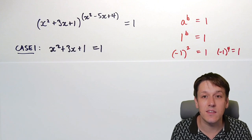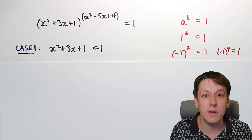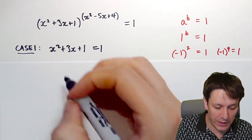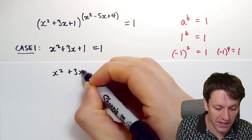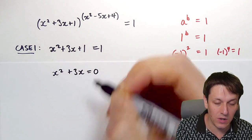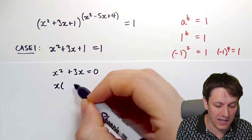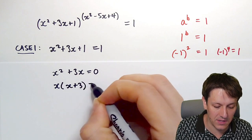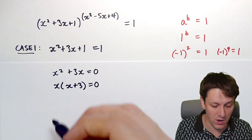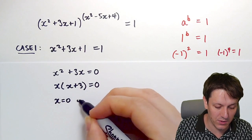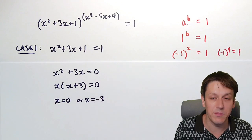Each of these cases is quite easy to deal with. In the first one, x squared plus 3x plus 1 equals 1. Subtracting 1 from each side gives x squared plus 3x equals 0. Factorizing the left-hand side gives x times (x plus 3) equals 0, so either x equals 0 or x equals minus 3.